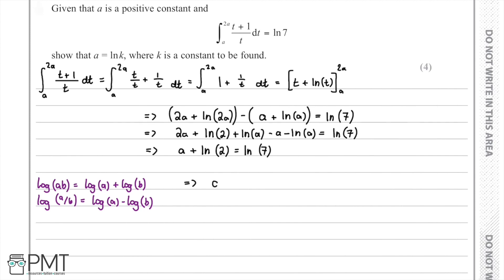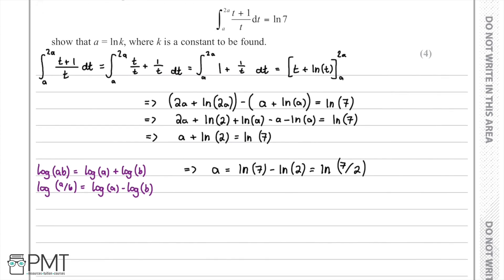To solve for a, we subtract ln(2) from both sides, leaving ln(7) − ln(2). Using the logarithm law log(a) − log(b) = log(a/b), we rewrite this as ln(7/2). So a = ln(7/2), which can be written as a = ln(k) where k = 7/2.